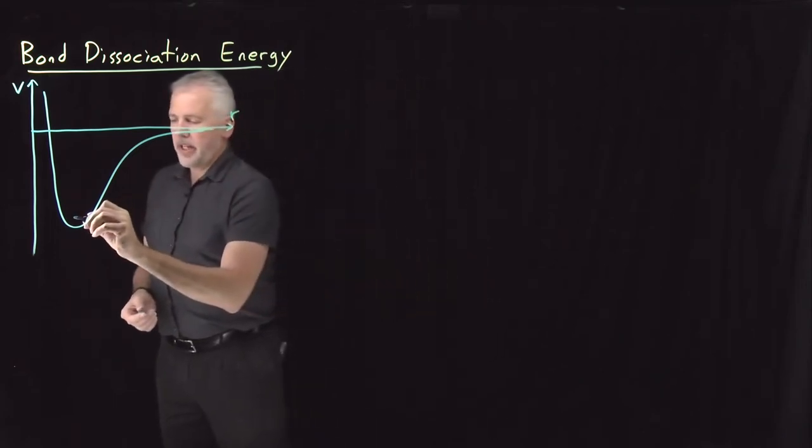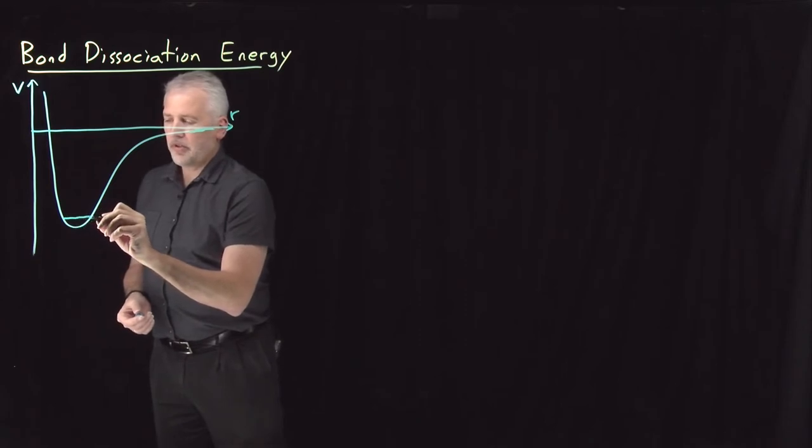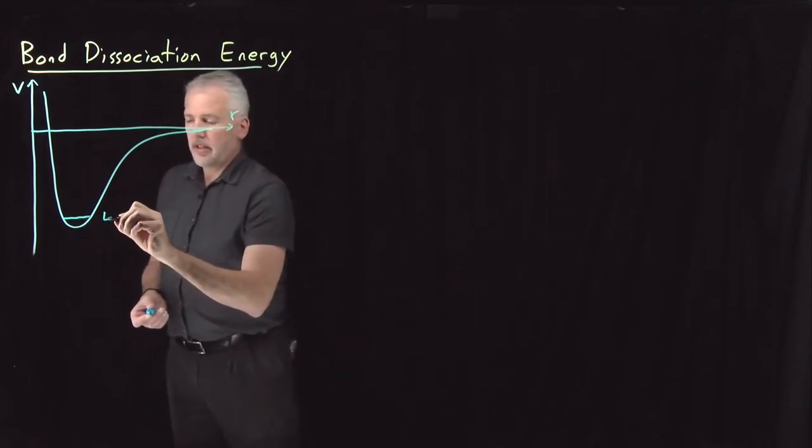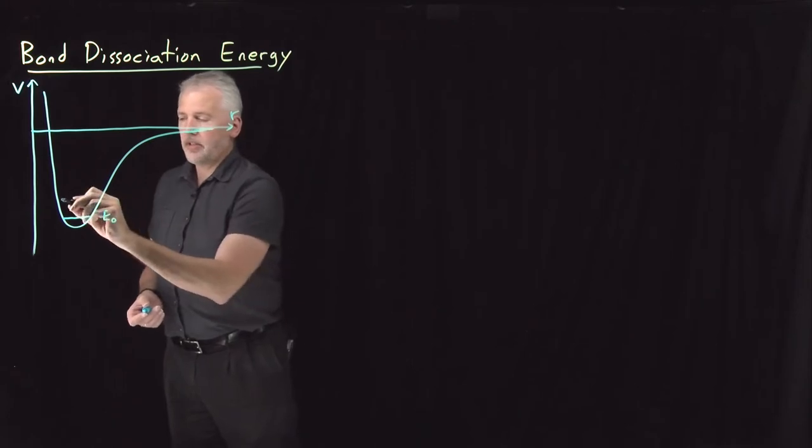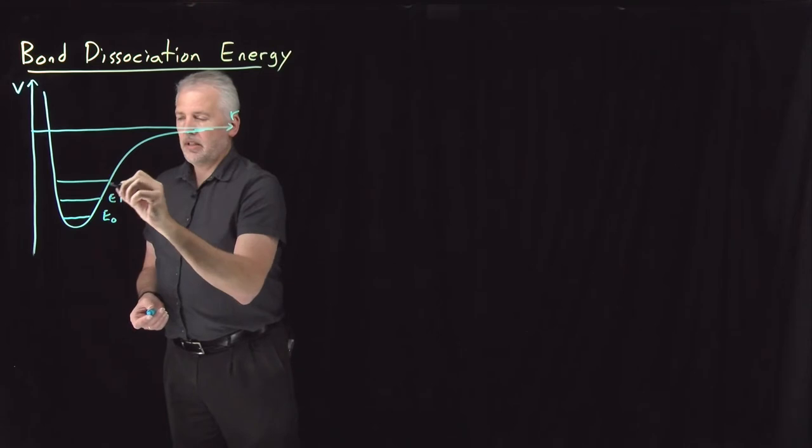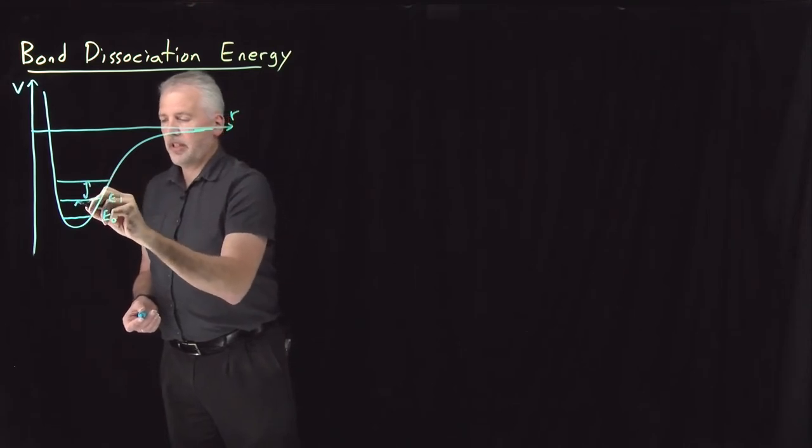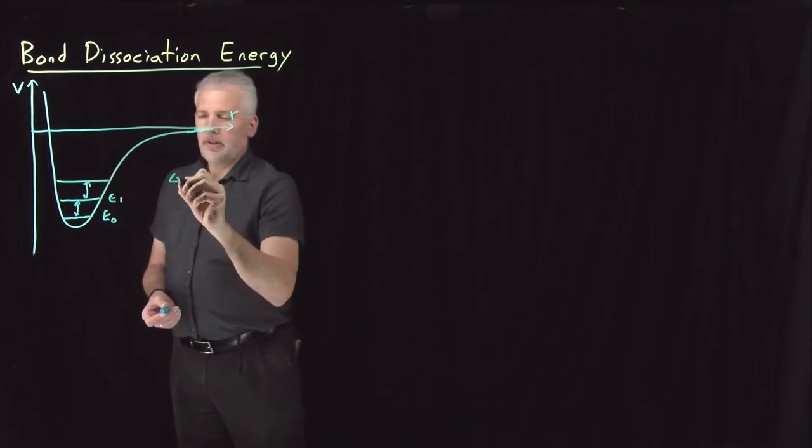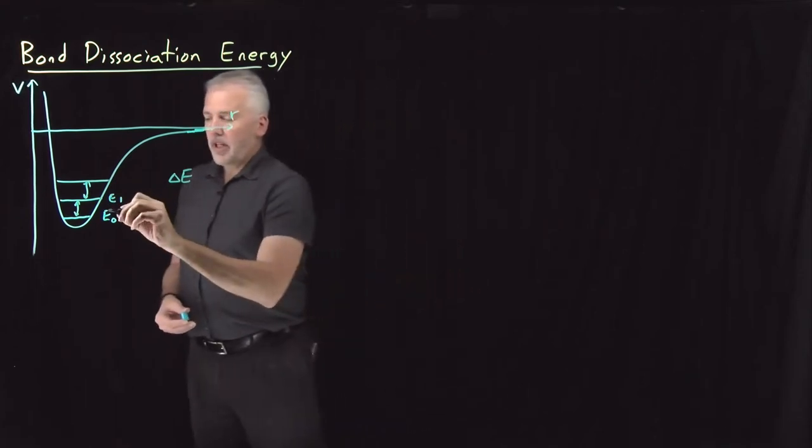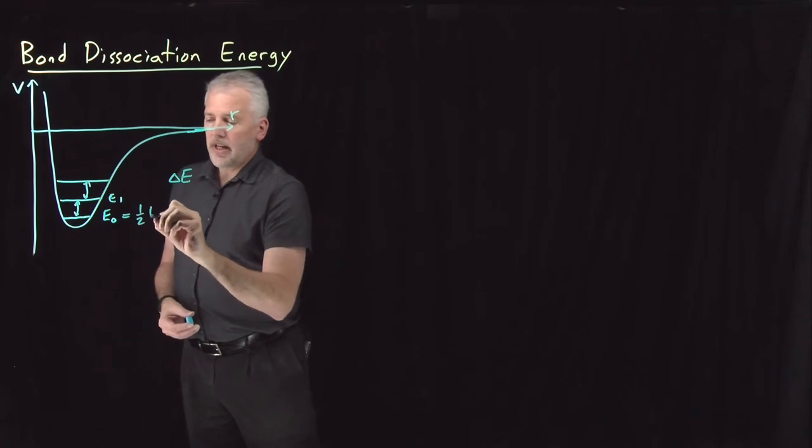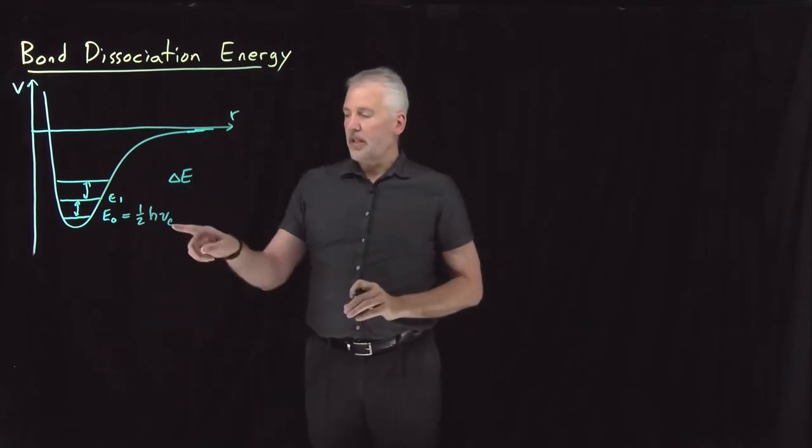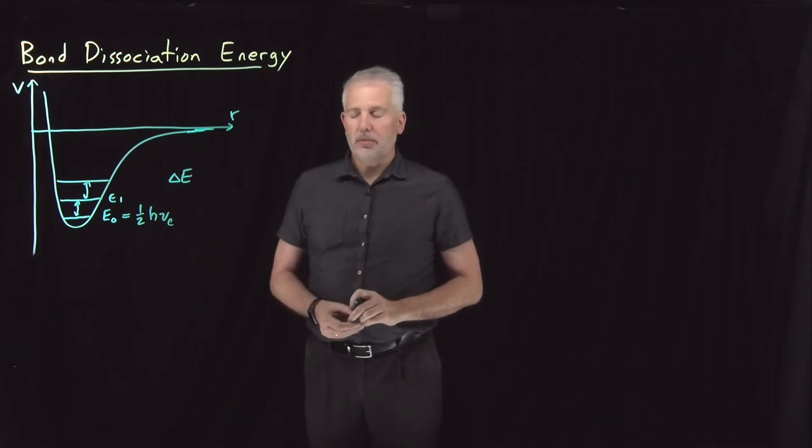From a quantum mechanical point of view, understanding the molecule as a harmonic oscillator or an anharmonic oscillator, we understand there's a ground state and there's some excited states. There's a gap between these energy levels, some delta E between the energy levels. If it's a purely harmonic oscillator, then that ground state would have an energy of one-half H nu, one-half times Planck's constant times the fundamental vibrational frequency of the molecule.